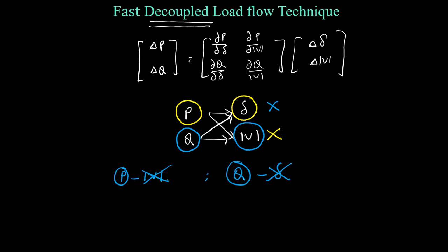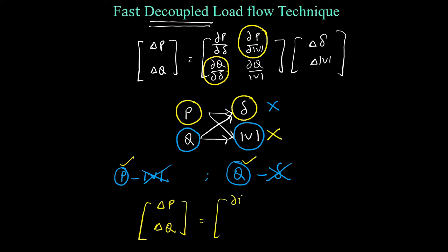Our problem has become very simple. If you observe the Jacobian matrix, you can neglect the terms that don't have significance. That means ∂P/∂|V| and ∂Q/∂δ will not have any significance in the Jacobian matrix, so we are considering them as zero. We will only study the relation between ∂P/∂δ and ∂Q/∂|V|.